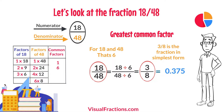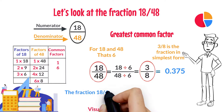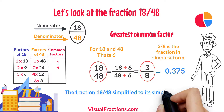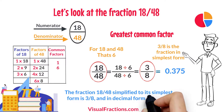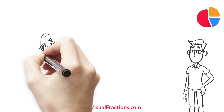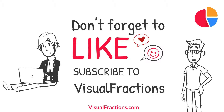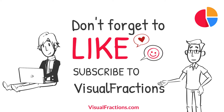So there you have it — the fraction 18/48 simplified to its simplest form is 3/8, and in decimal form it's 0.375. If you found this tutorial helpful, go ahead and smash that like button and don't forget to subscribe to Visual Fractions. Thanks for watching!